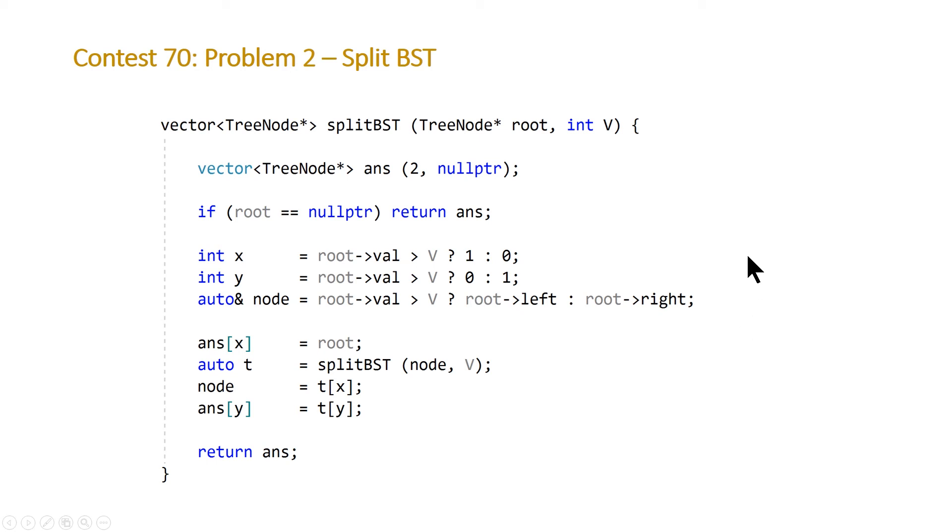So we're going to declare two ints X and Y which represent where our root is going and where what we've extracted from our recursive call to split BST is going. As we showed in our visual example if the value of our current node that we're processing is greater than V we're going to store root in the second element else we'll store it in the first. Y is just the opposite of X so if X is one Y is zero and then we need a reference to the node that we're going to process.